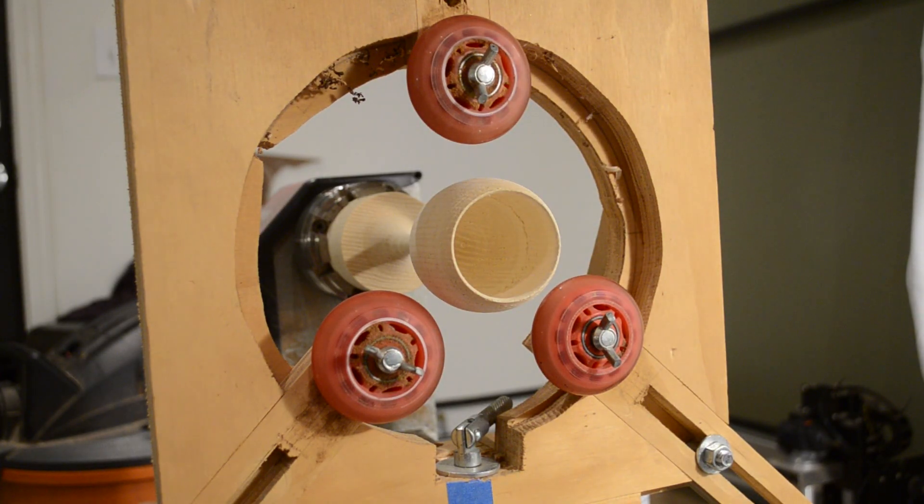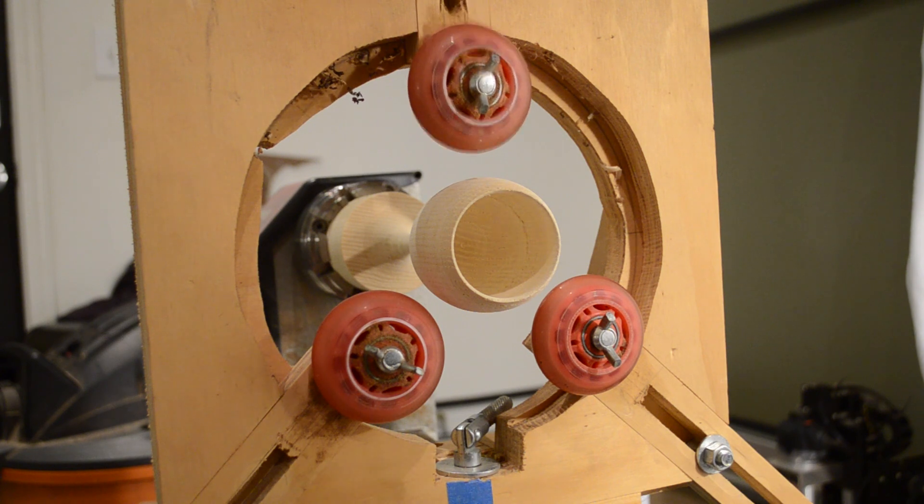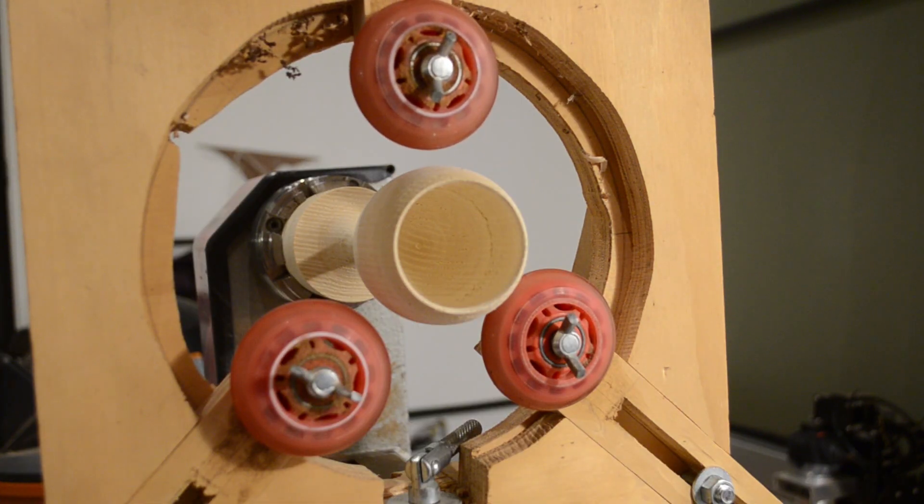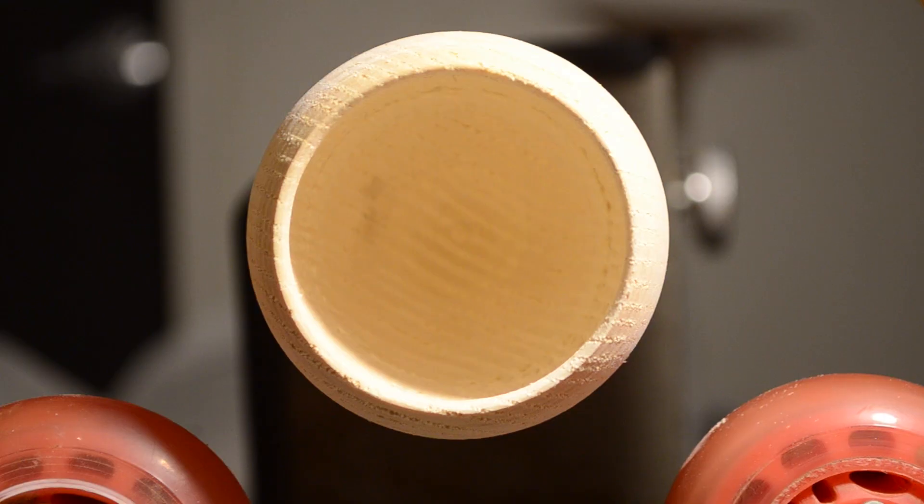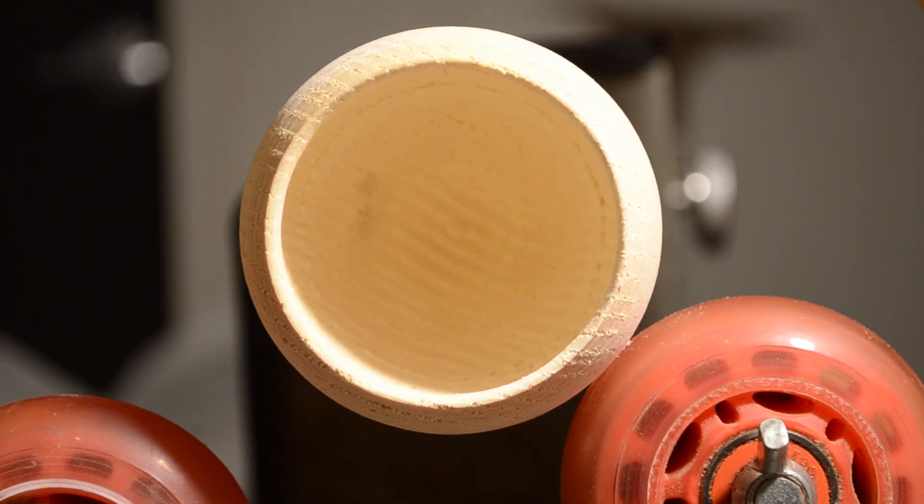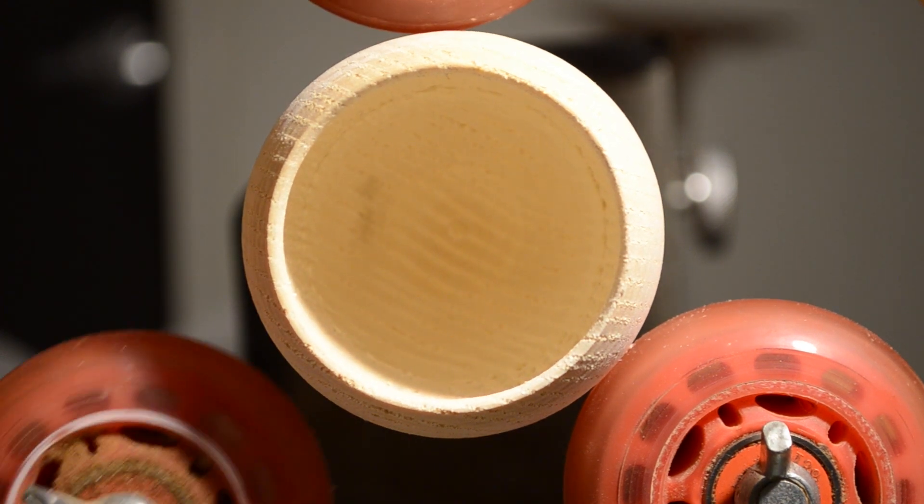This is a traditional style three-armed Steady Rest that I built out of some plywood. Because these arms are actuated independently, it's nearly impossible to get even pressure across all of them. This means that your workpiece is going to deflect and be completely out of round from anything you've turned prior to it.